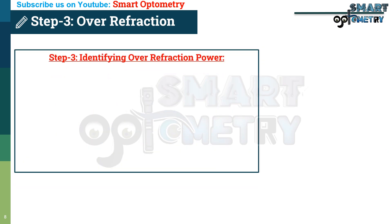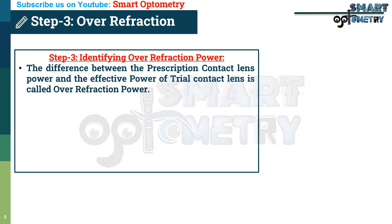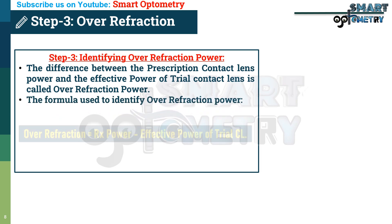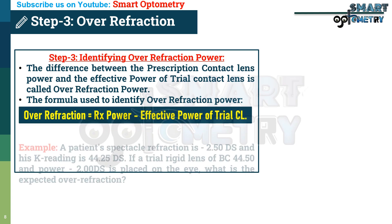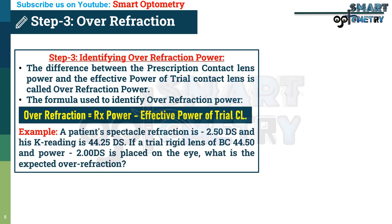Step 3 — Identifying over-refraction power: the difference between the prescription contact lens power and the effective power of the trial contact lens is the over-refraction power. Formula: over-refraction = prescription power minus effective power of trial contact lens. Example: a patient's spectacle refraction is −2.50 D spherical and their keratometry reading is 44.25 D spherical. If a trial rigid lens of base curve 44.50 D and power −2.00 D is placed on the eye, what is the expected over-refraction?